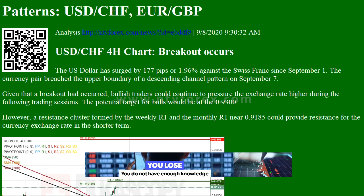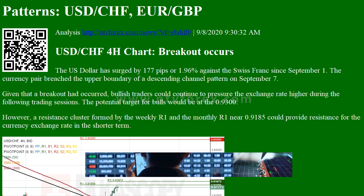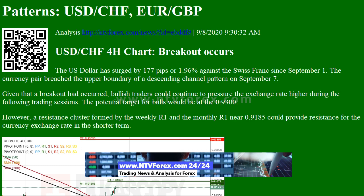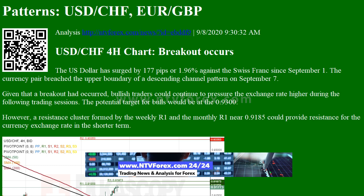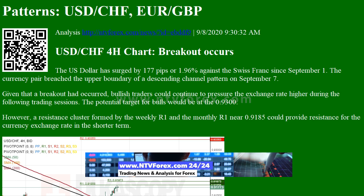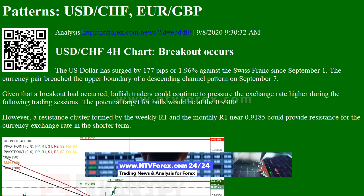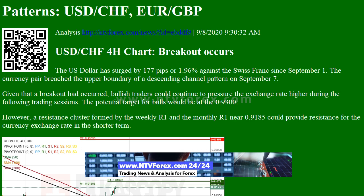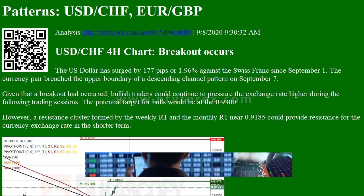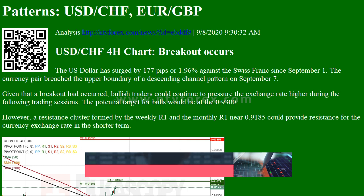USDCHF 4H chart breakout occurs. The US dollar has surged by 177 pips or 1.96% against the Swiss franc since September 1. The currency pair breached the upper boundary of a descending channel pattern on September 7.